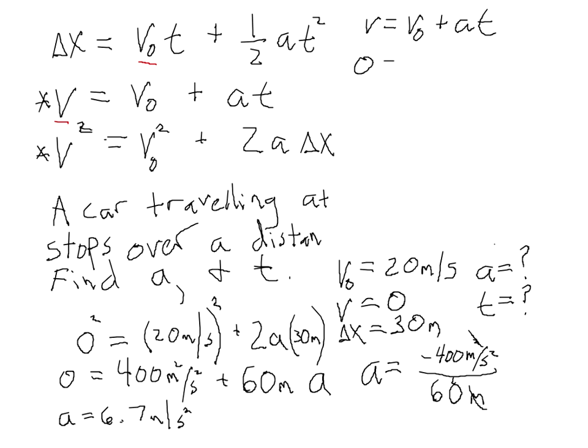V equals V₀ plus AT. V, the final velocity, is zero. V₀, the initial velocity, is 20 meters per second. The acceleration is negative 6.7 meters per second squared, and T is the time. So let's add 6.7 meters per second squared T to both sides. Divide by 6.7. So that gives us T equals 20 meters per second over 6.7 meters per second squared.